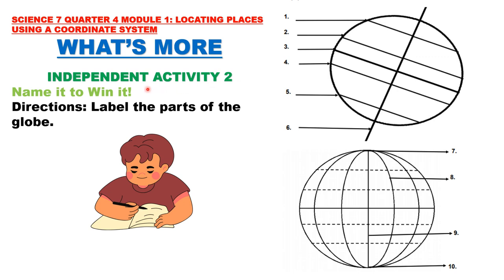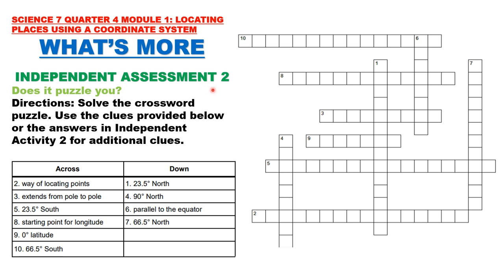Independent Activity 2 — Name It to Win It: Label the parts of the globe. You are going to label the names of the following lines. Independent Assessment 2 — Does It Puzzle You? Solve the crossword puzzle using the clues provided. Across: 2 — way of locating points; 3 — extends from pole to pole; 5 — 23.5 degrees south; 8 — starting point for longitude; 9 — 0 degrees latitude; 10 — 66.5 degrees south. Down: 1 — 23.5 degrees north; 4 — 90 degrees north; 6 — parallel to the equator; 7 — 66.5 degrees north.